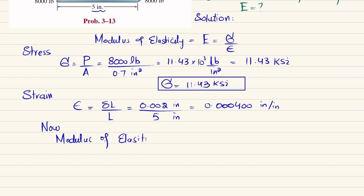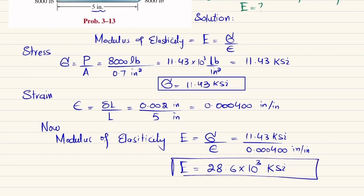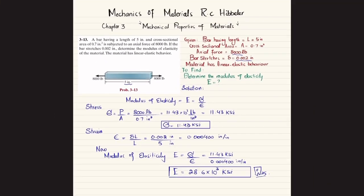Now the modulus of elasticity: E = stress / strain = 11.43 ksi / 0.0004 = 28.6 × 10³ ksi. This is the modulus of elasticity for this material under the given axial load and cross-sectional area, and that is the answer to problem 3-13.